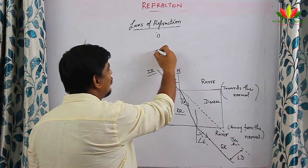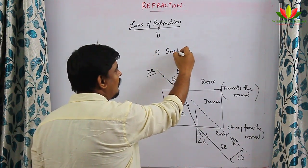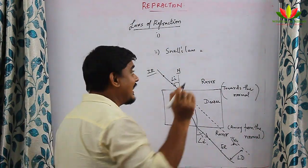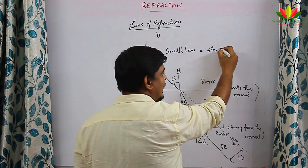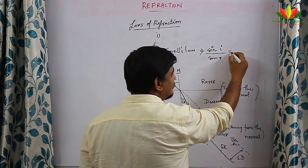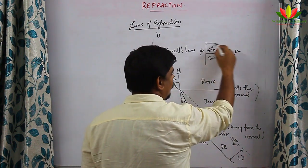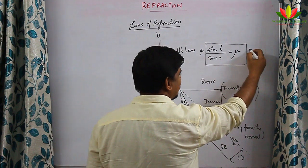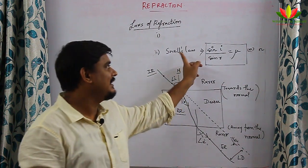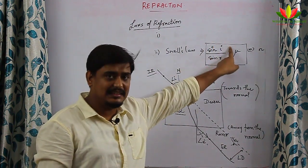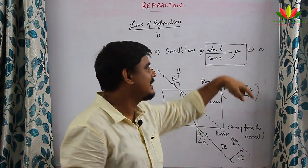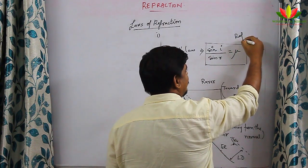The second law of refraction, also known as Snell's law, states that sine of angle of incidence divided by sine of angle of refraction is a constant. That constant is called mu (μ) or n in some books, and it is known as the refractive index.